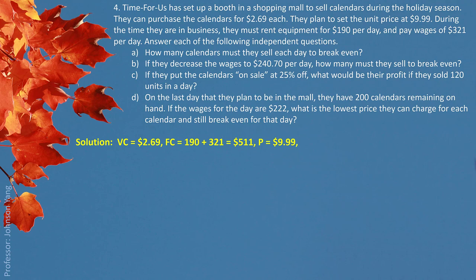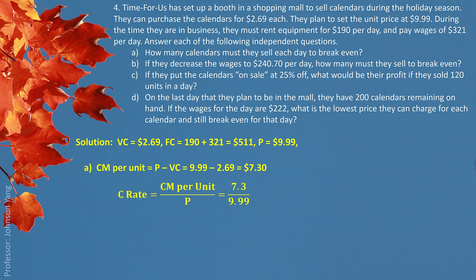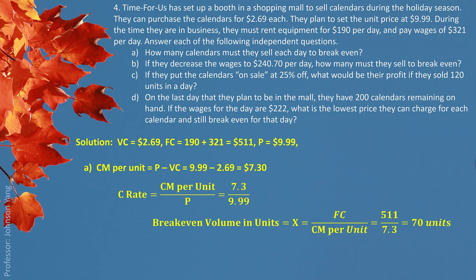With a price of $9.99, we can calculate the contribution margin per unit as price minus variable cost, giving $7.30. We can also compute the contribution rate as $7.30 divided by $9.99. Part A asks how many calendars must they sell each day to break even — for this we use the contribution margin per unit directly and apply the break-even units formula.